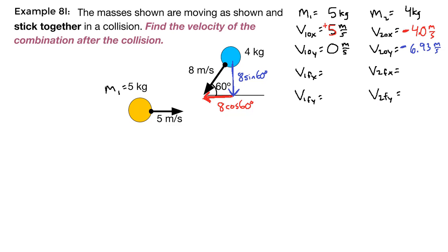Now, the key thing here is because these things stick together, that means that there's going to be a final x and a final y part of the velocity that is the same as each other. So both of these are the same.